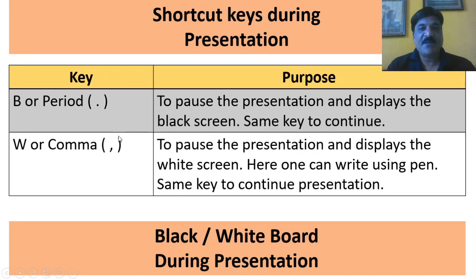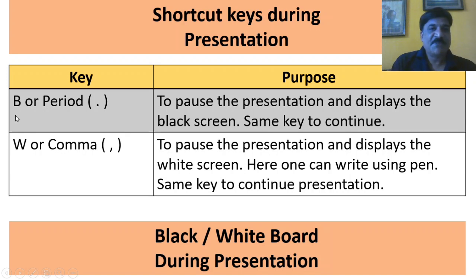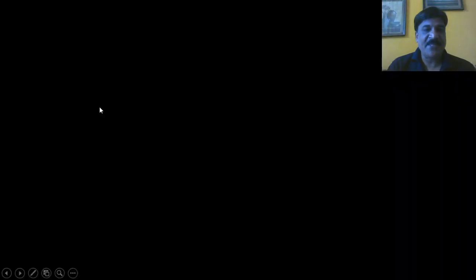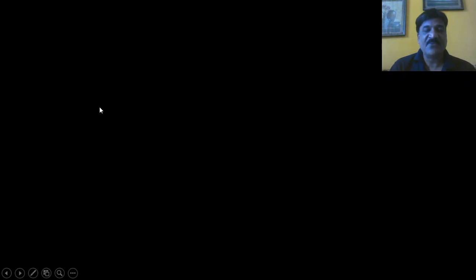Now, how to use a blackboard and whiteboard during the presentation. For that purpose, we have a key called B, or simply press dot, in order to show a blackboard. I am pressing B and observe that your screen has been converted into the black screen. This is basically useful in order to discuss certain points so that the audience will concentrate on you rather than on your presentation.